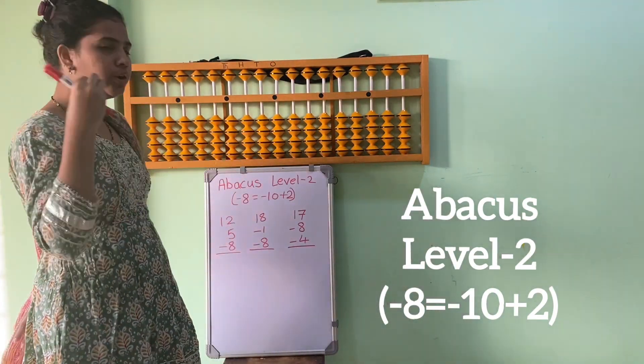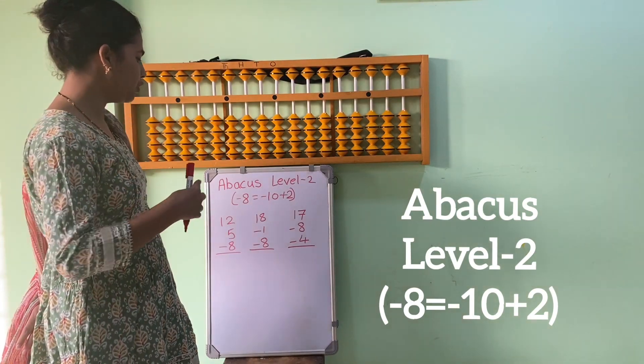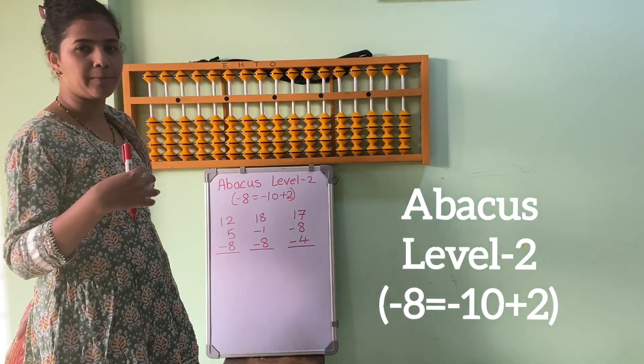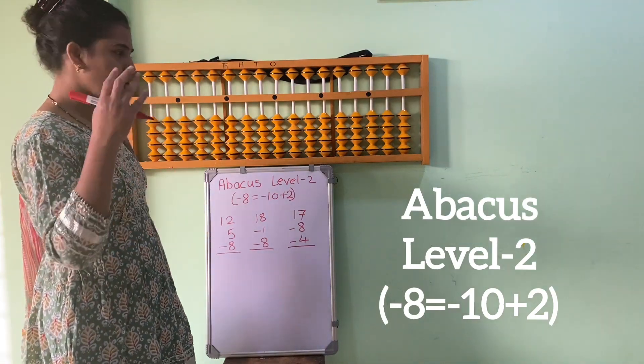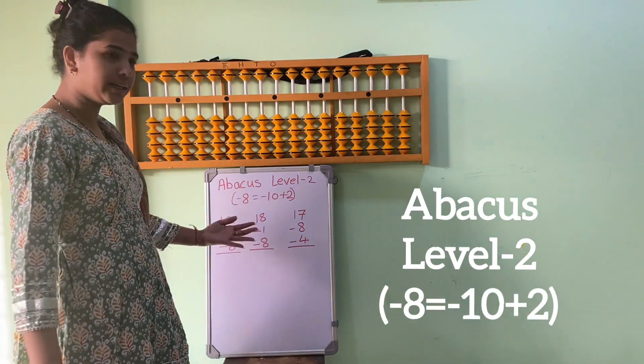Whenever you have not remembered the formula, what you have to do is practice the formula. You have to write the formulas 3 to 4 times so you can remember the formula or practice it with the sums.